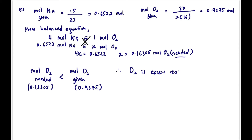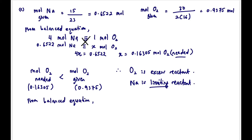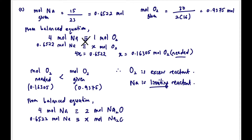Since we have more O₂ than needed, O₂ is the excess reactant, and Na is the limiting reactant by default. We're not done yet — the question asks for the mass of product. From the balanced equation, 4 moles of Na produces 2 moles of Na₂O.